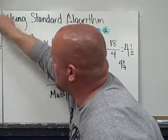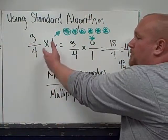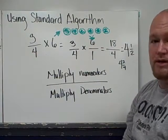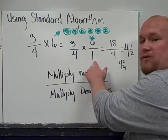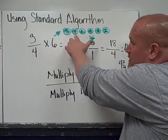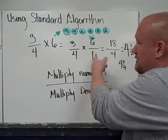So what does this look like as a standard algorithm? Using the standard algorithm, we take three-fourths and we multiply it by six wholes. You can take all whole numbers and put them over one to make them a fraction because, look, I mean, one, two, three, four, five, six wholes at one part each. So it's six over one.